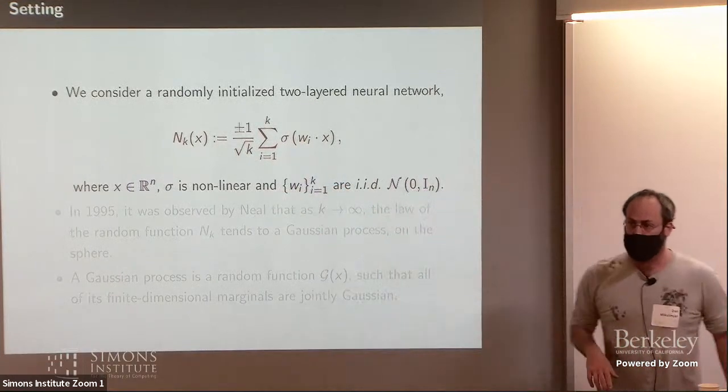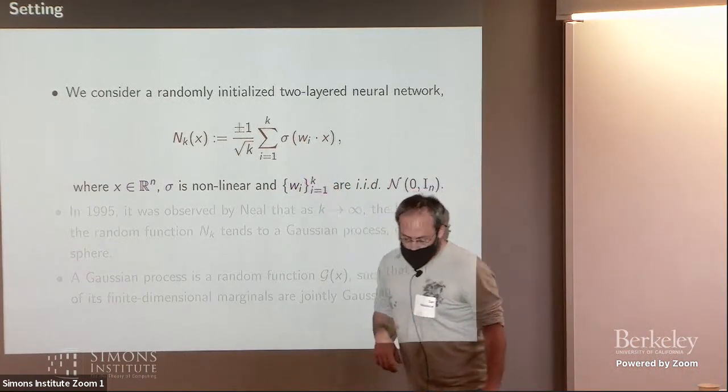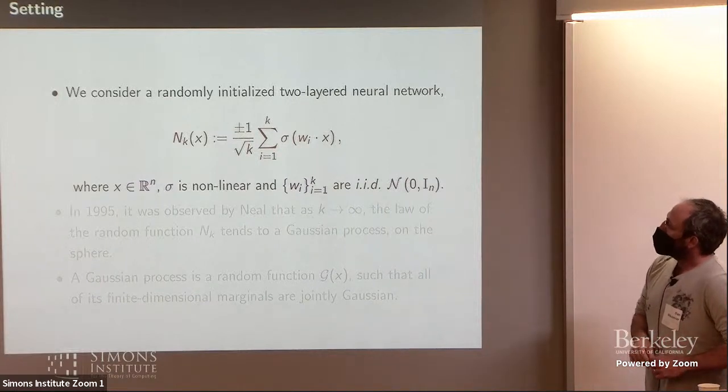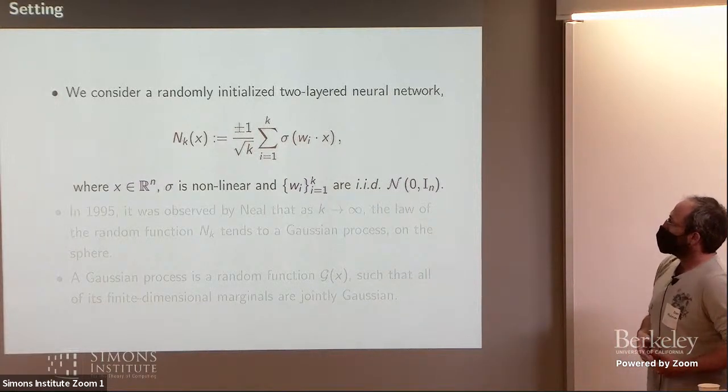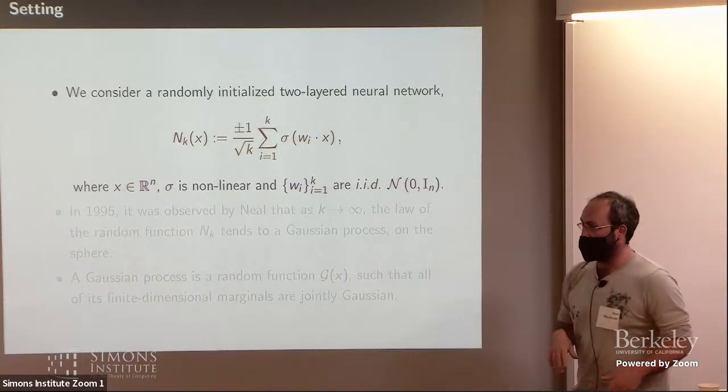Right, so each one of those is a random function. You're summing K random functions and normalizing. So standard reasoning says that it should converge to some Gaussian limit. There should be some central limit theorem.